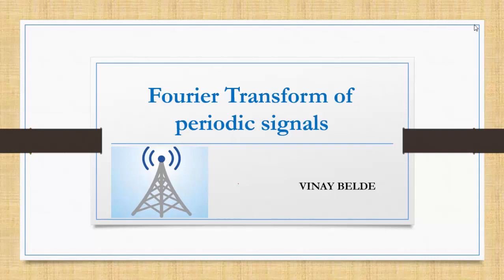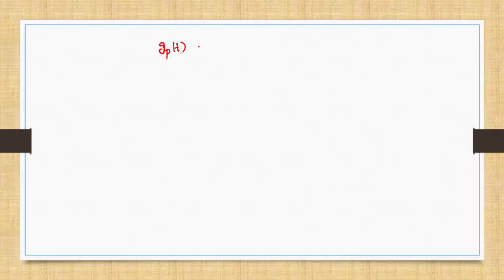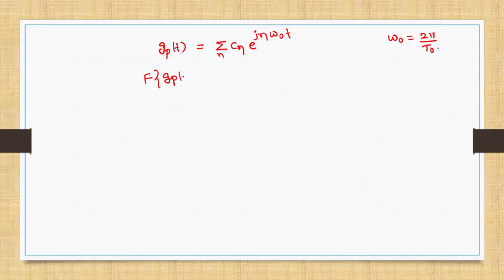Hi, welcome to the analog communication course. In this video we will discuss the concept of finding Fourier transforms for periodic signals. Consider a signal gp which is periodic. We can write this using the exponential Fourier series as sigma Cn e^(jn*omega0*t), where omega0 = 2*pi/T0. The objective is to find out the Fourier transform of this periodic signal.